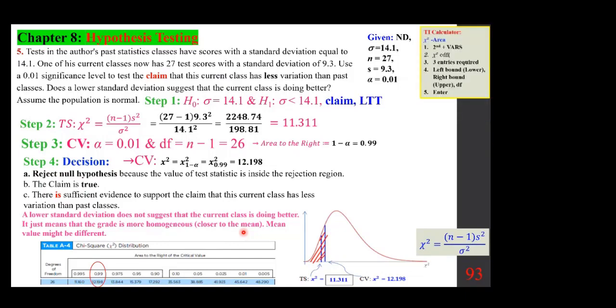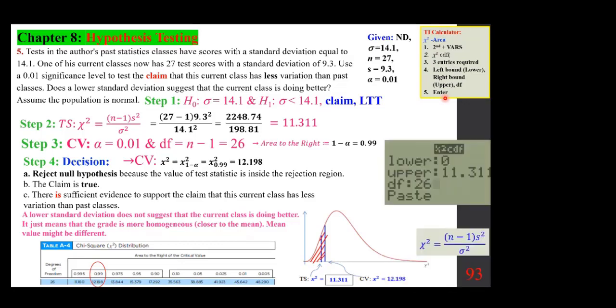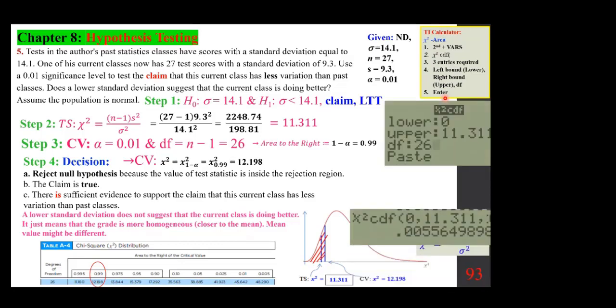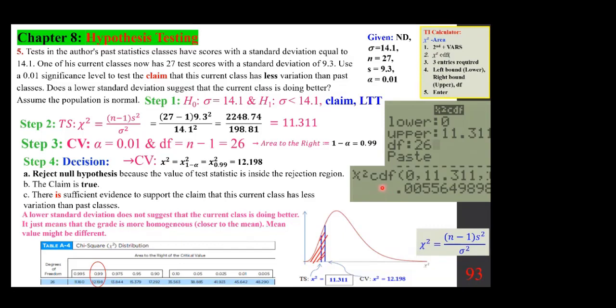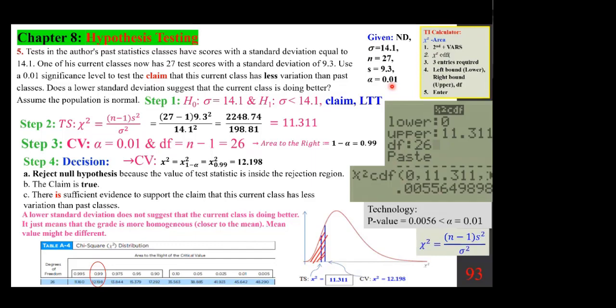If we were to do this by technology, we could calculate the chi-squared value given the CDF, which gives the P-value. For this question, the P-value is approximately 0.0056, which is less than alpha of 0.01 — same decision: reject the null hypothesis.